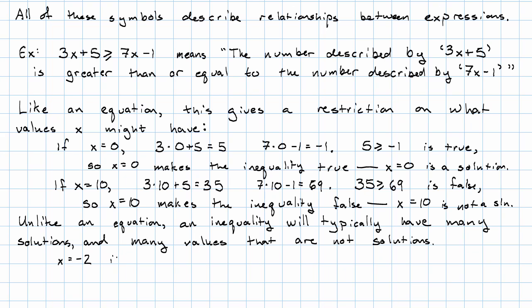To continue with this example, x equals negative 2 is a solution since 3 times negative 2 plus 5 is, in fact, greater than or equal to 7 times negative 2 minus 1. That is, negative 1 is greater than or equal to negative 15.